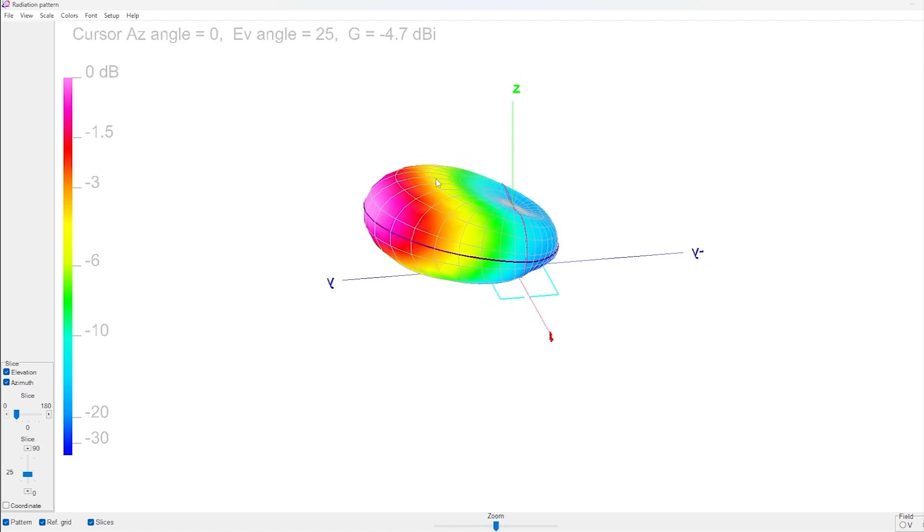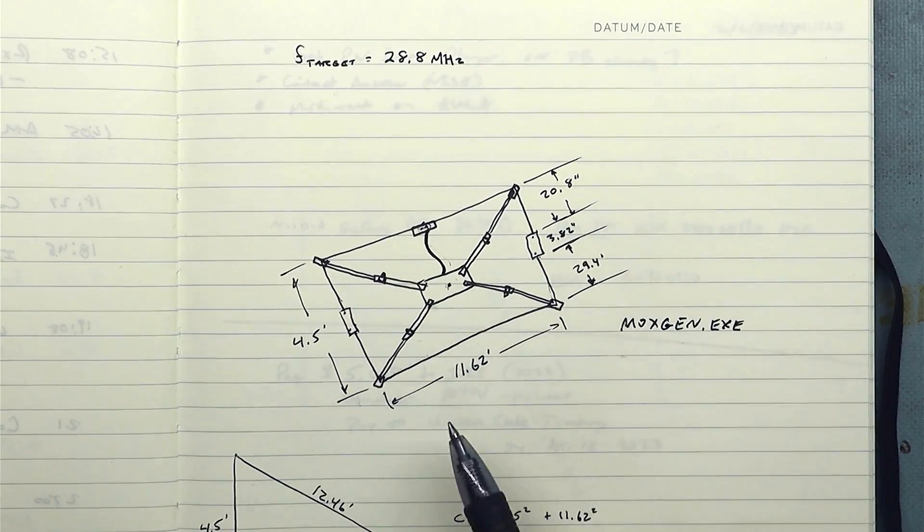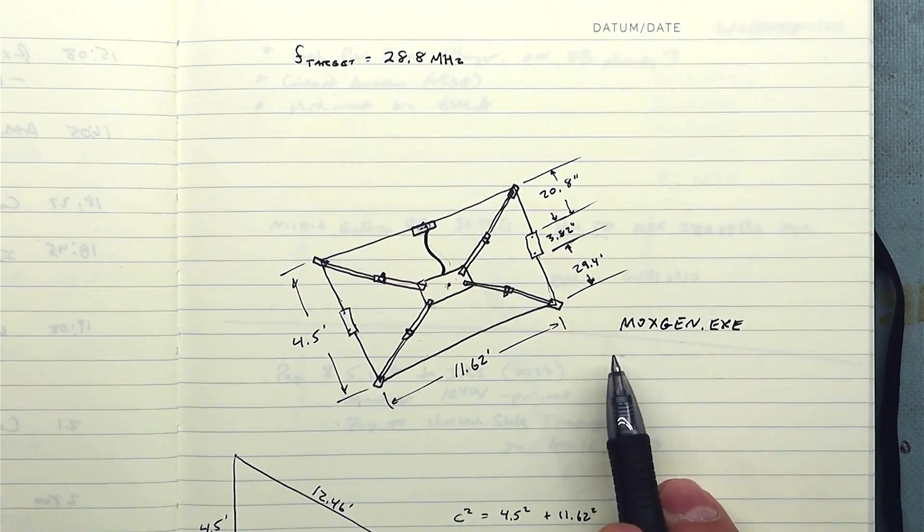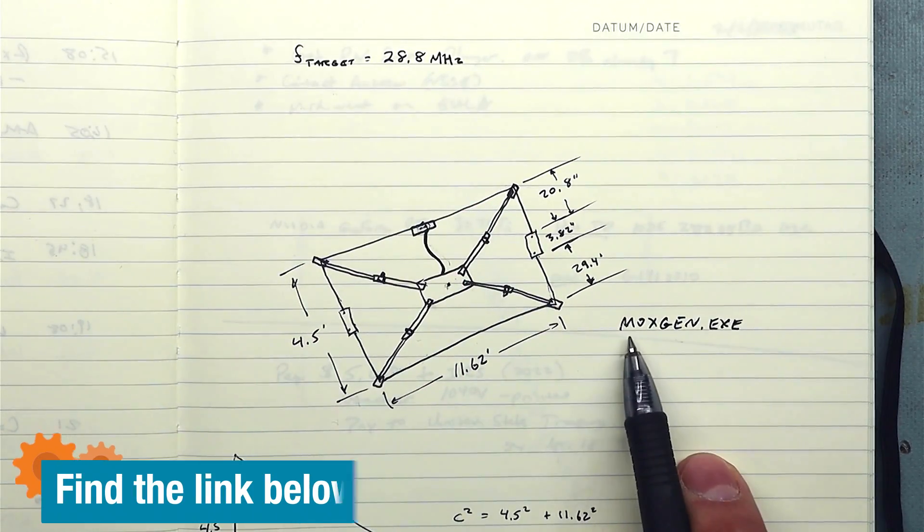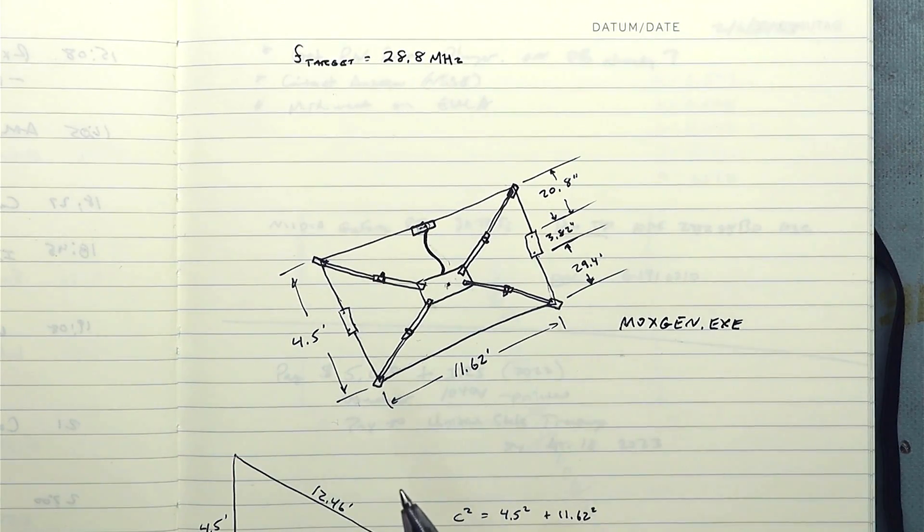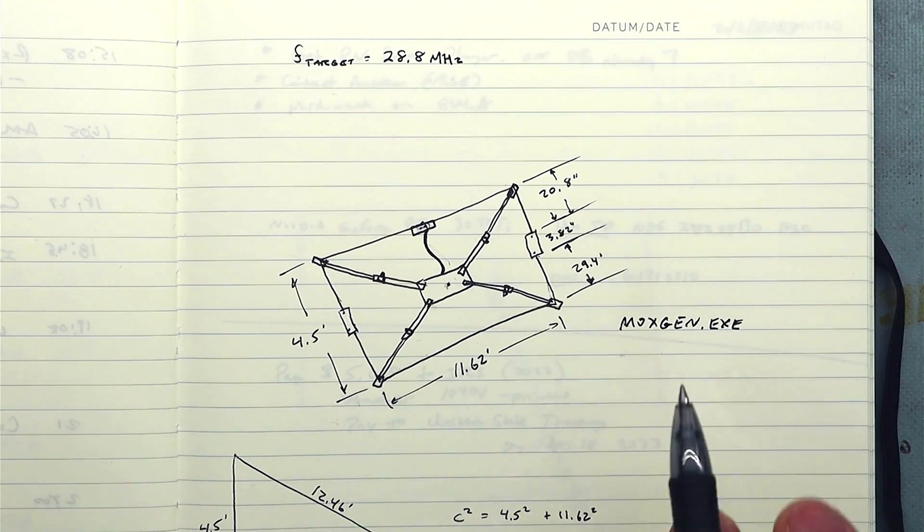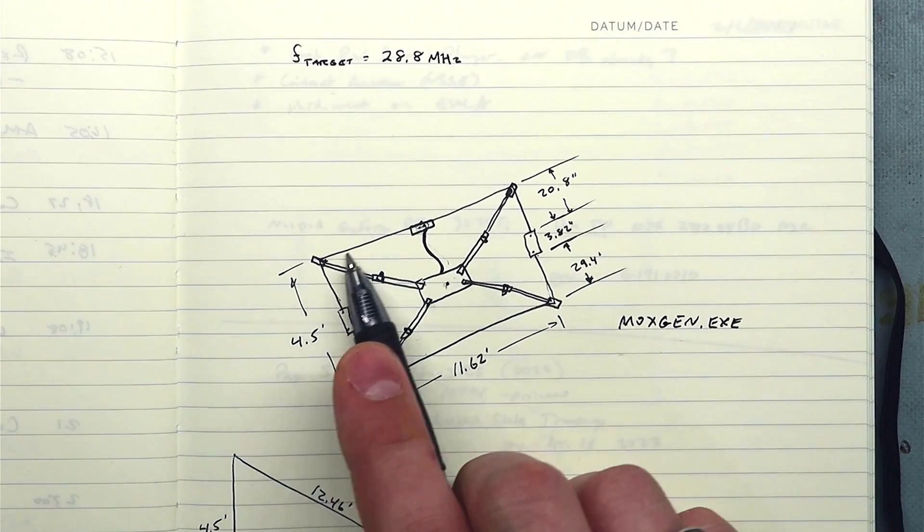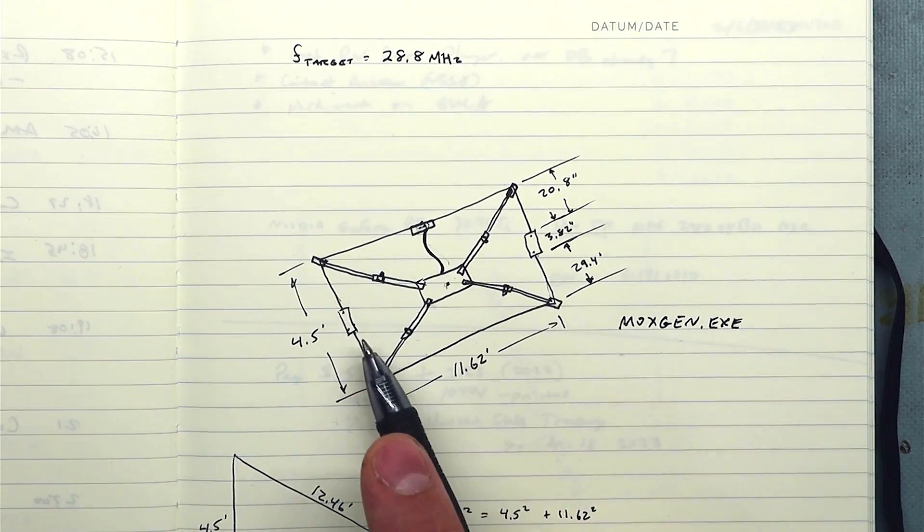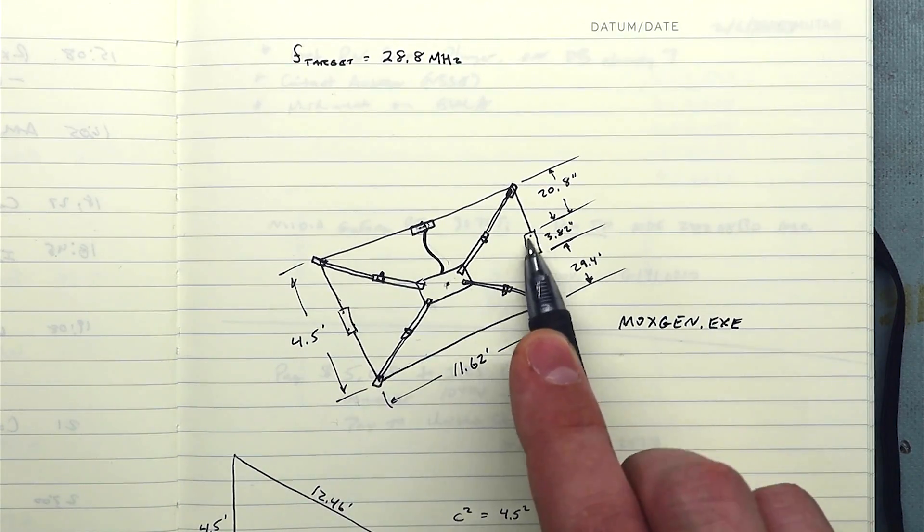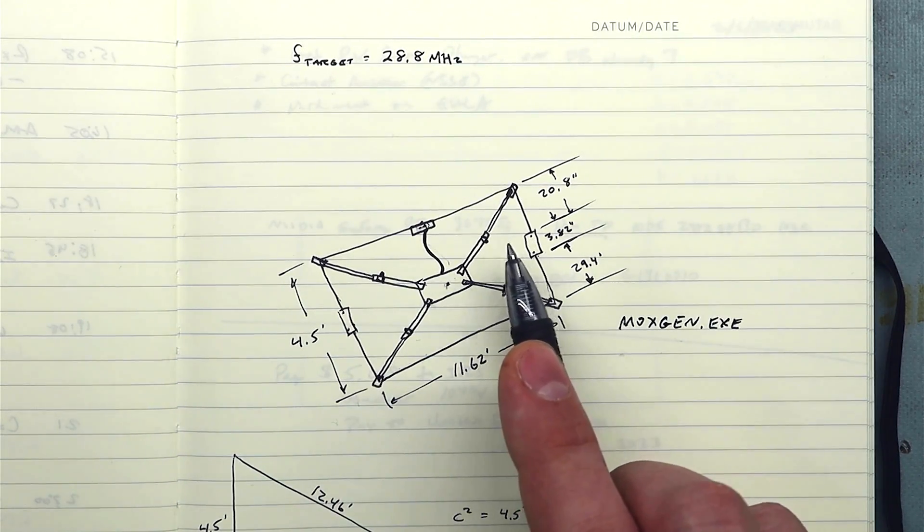So now I made a sketch of the antenna that I want to build so let's go ahead and take a look at that real quick before we make it. So here's a little sketch of the antenna that we're going to build today. The target frequency was 28.8 megahertz and this is the program that I used to come up with the dimensions. It's called MoxGen.exe. There are some online calculators that you can use but they've always come out wrong for me and MoxGen has always been correct.